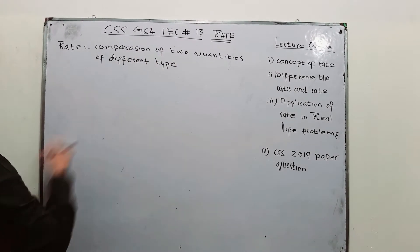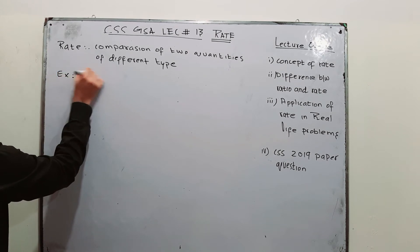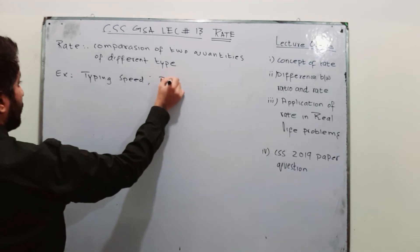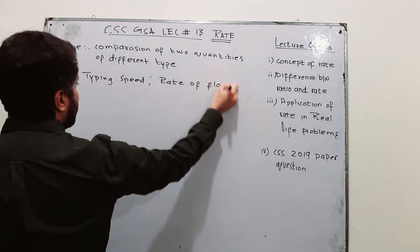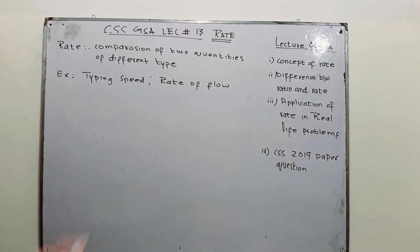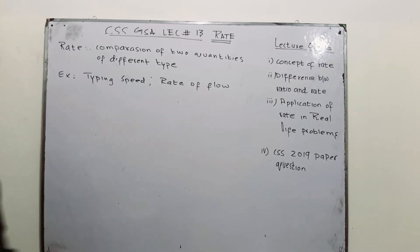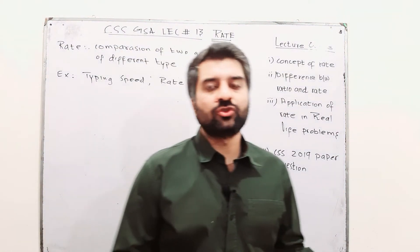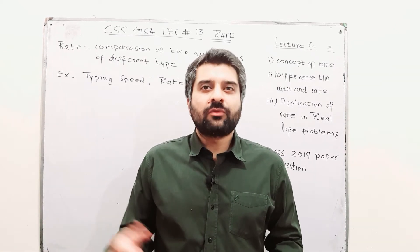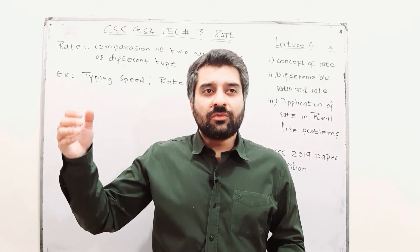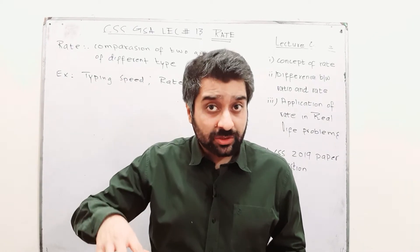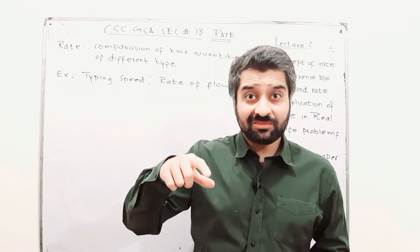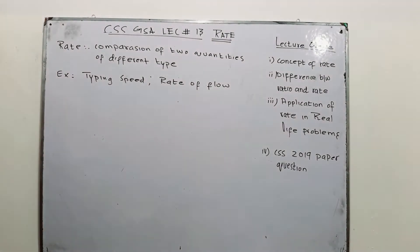One important example is typing speed, and another is rate of flow. When a pipe fills a tank in a particular time — for example, from the 2019 paper, we use two pipes to fill a tank. One pipe is faster and the other is slower. If both pipes together fill the tank in five hours, find the time taken by the slower pipe alone. This is the concept of rate: volume per unit time.